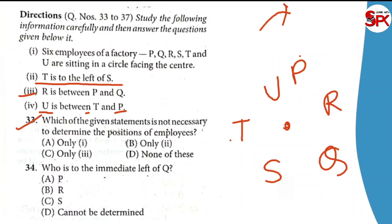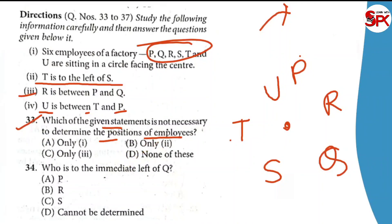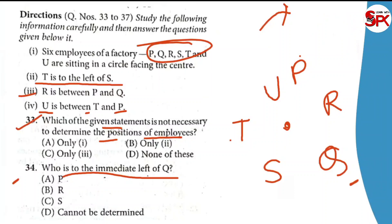Question 33: Which of the given statements is not necessary to determine the position of employees? We have already set up the arrangement. Now which statement is extra — which one is not needed? The answer is: none of these, or we check — only one, only two, or only three. P is to the immediate left of Q — Q's left side — Q is here. So the answer is C. Your right answer is C.